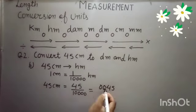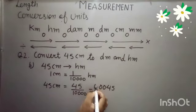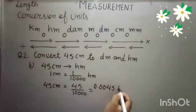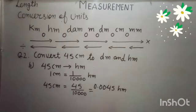1, 2, 3, 4. Now put your decimal and your unit will become Hectometer and your answer is 0.0045 Hectometer.